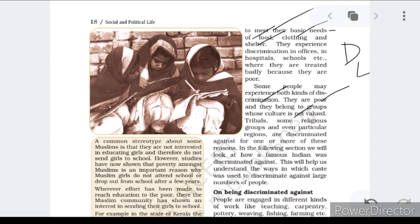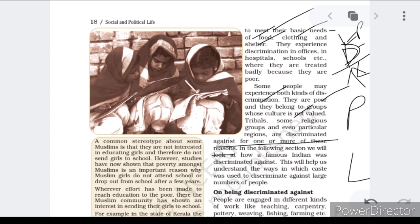For example, a Dalit is of the lowest caste and also tends to be poor. So a Dalit person has to face difficulties of being poor as well as being from a low caste. Tribal groups, some religious groups, and even people from particular regions are discriminated against for one or more of these reasons. Being poor or coming from a lower group becomes a part of inequality.